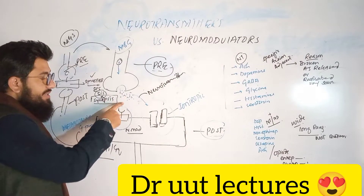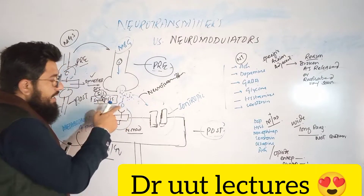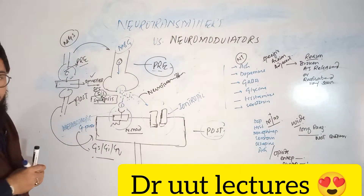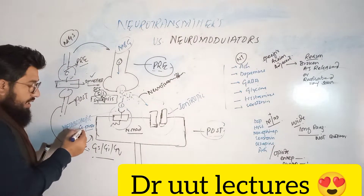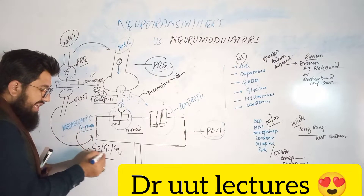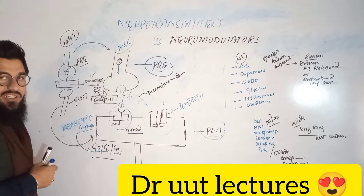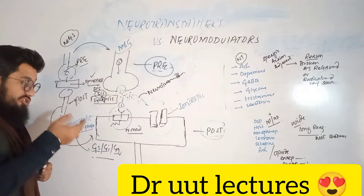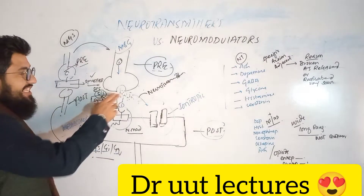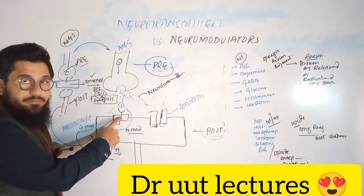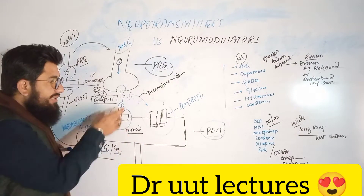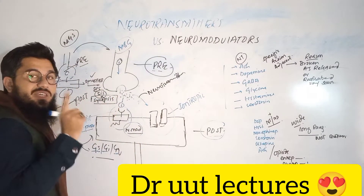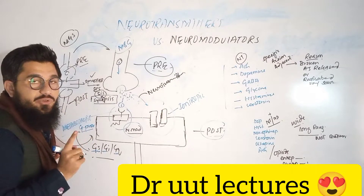On the postsynaptic neuron, we have certain receptors responsible to do their jobs. If a chemical comes and binds with metabotropic receptors — also called G-protein receptors, including GS, GI, and GQ subtypes — and shows its internal action via those receptors, then this chemical is called a neuromodulator.